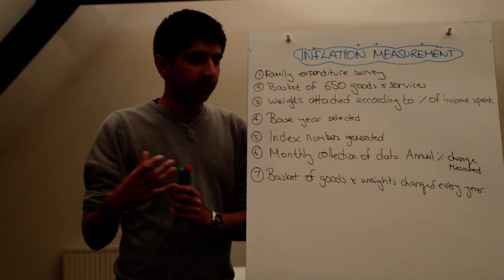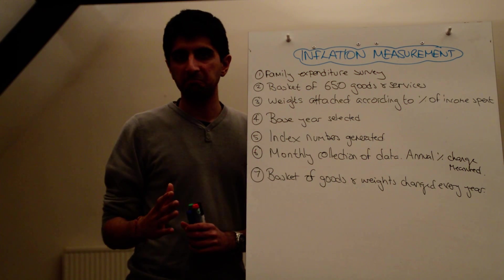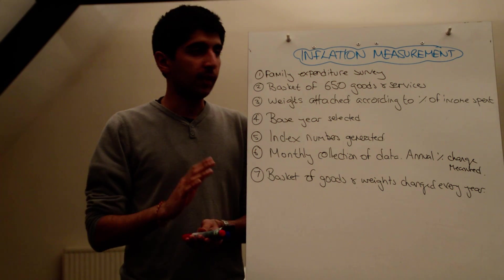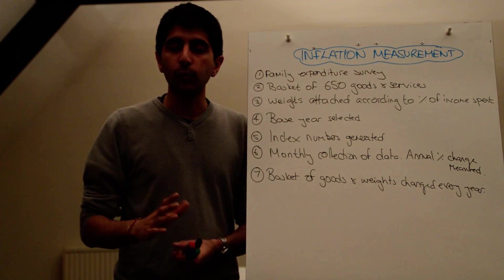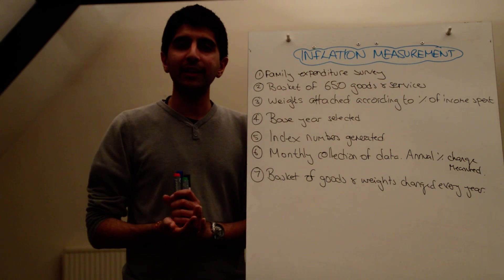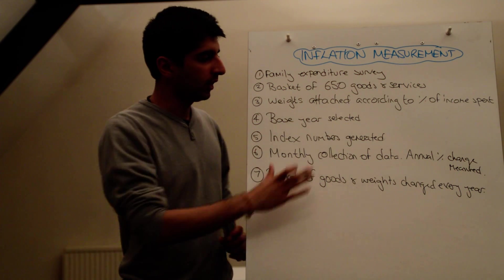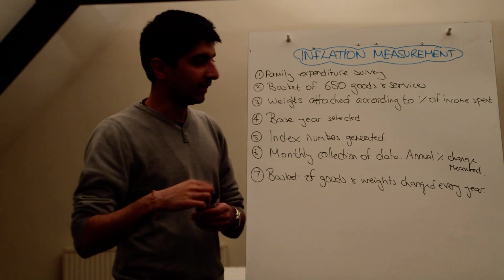Then we move into index. So we pick a base year. Whatever year that might be. If it's 2005, it's 2005. If it's 2006, it's 2006. It doesn't matter. We pick a base year, and whatever inflation was in that year, we then just say, right, call it 100. Whatever it was then, call it 100. The base year is selected, which has an index of 100.